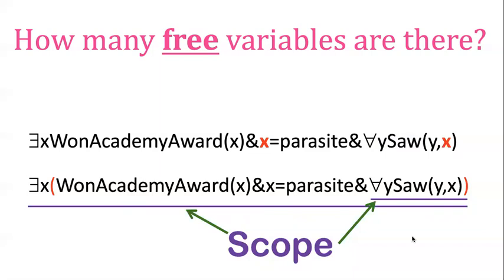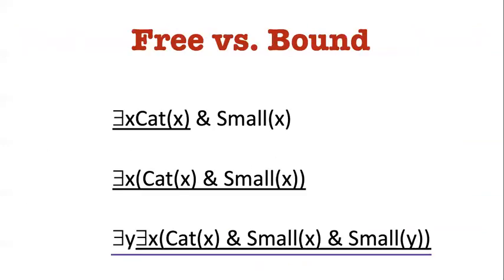So the scope of the existential is underlined in this purple. And then the scope of this universal quantifier is underlined here. And now finally, this is a sentence. This thing has a truth value. And what it says is something won an Academy Award, which is Parasite, and everybody saw it. That's probably false. Not everybody saw it, but it depends upon who we're talking about.